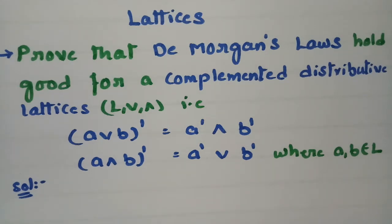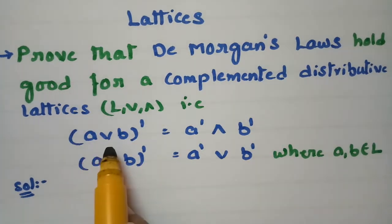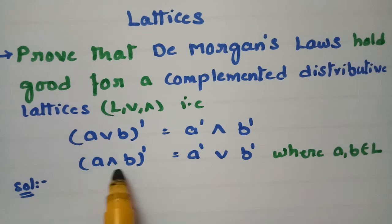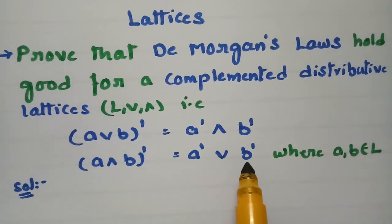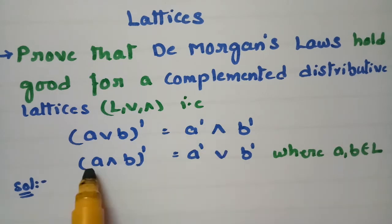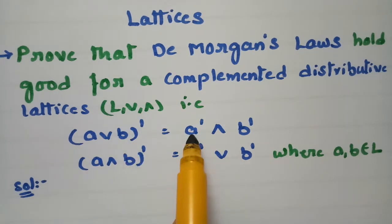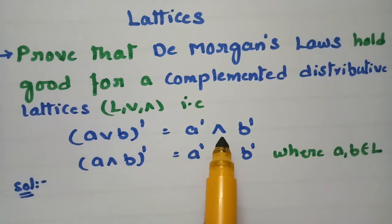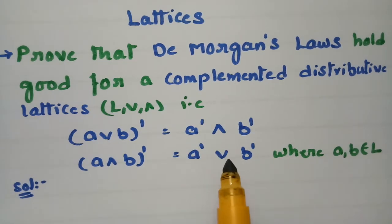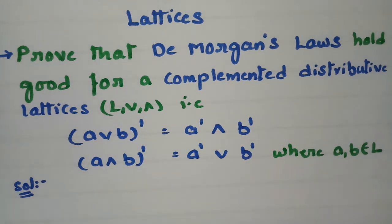This topic is on lattices and we have to prove that De Morgan's laws hold good for a complemented distributive lattice L. That is, (A∨B)' = A'∧B', and (A∧B)' = A'∨B'. The simple logic is: when you take the complement of a join, the join becomes meet, and when you take the complement of a meet, the meet becomes join.